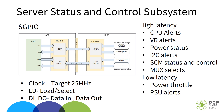Moving on to the serial GPIO interface: the signaling involves four signals — the clock, load or select line, and data in and data out signals. The target frequency of the clock is intended to be 25 MHz or higher. We support both a high latency and a low latency interface, with latency determined by the number of GPIOs serialized on these buses. High latency signals include CPU alerts, VR alerts, power status, I2C alerts, MUX selects, and SEM status and control signals. Low latency signals include power throttle and PSU alert type signals, where a quick response may be desired.